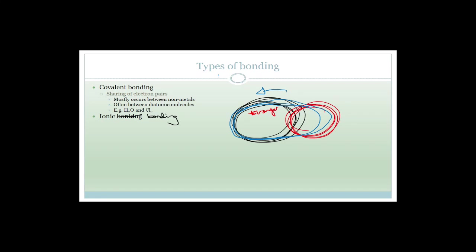Think of it this way: if you are married, you share your stuff. But when you divorce or break up with someone, one person might end up with way more stuff than the other. That's kind of what's happening — the one with the high electronegativity is the one keeping all the stuff, whereas the other is giving it away.